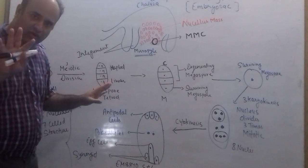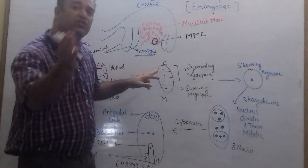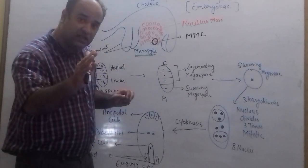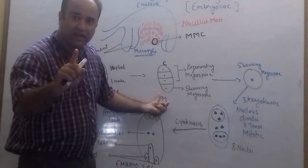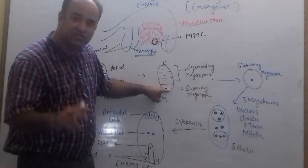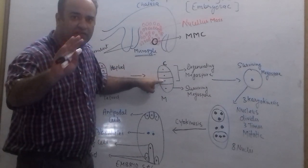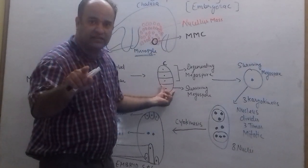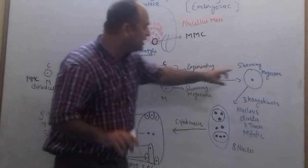The three cells towards the chalazal end will degenerate, and one cell towards the micropylar end will survive. This is the cell which is going to survive, and the other three cells will degenerate. The surviving cell towards the micropylar end will grow in size — this is the functional megaspore.